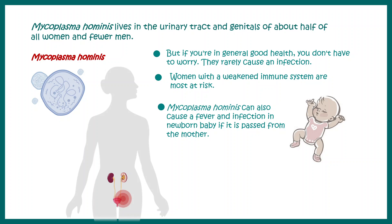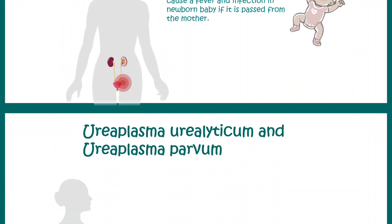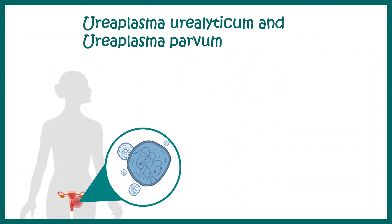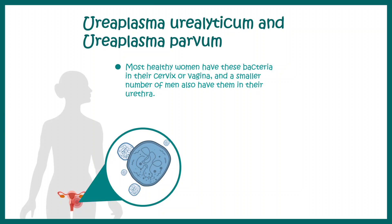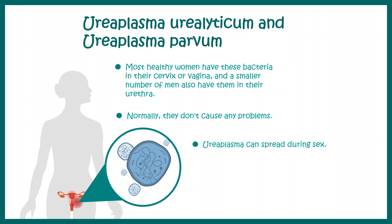Mycoplasma hominis can be transferred from a mother's body to the baby, so it can cause fever in newborns. There are other species like Ureaplasma, which can also infect the female reproductive tract. They are generally found in the cervix and vagina, and are present in smaller numbers in the male urethra. They can spread to a partner during sex and can be transmitted from mother to baby in the womb or during childbirth, potentially causing harm to the newborn.